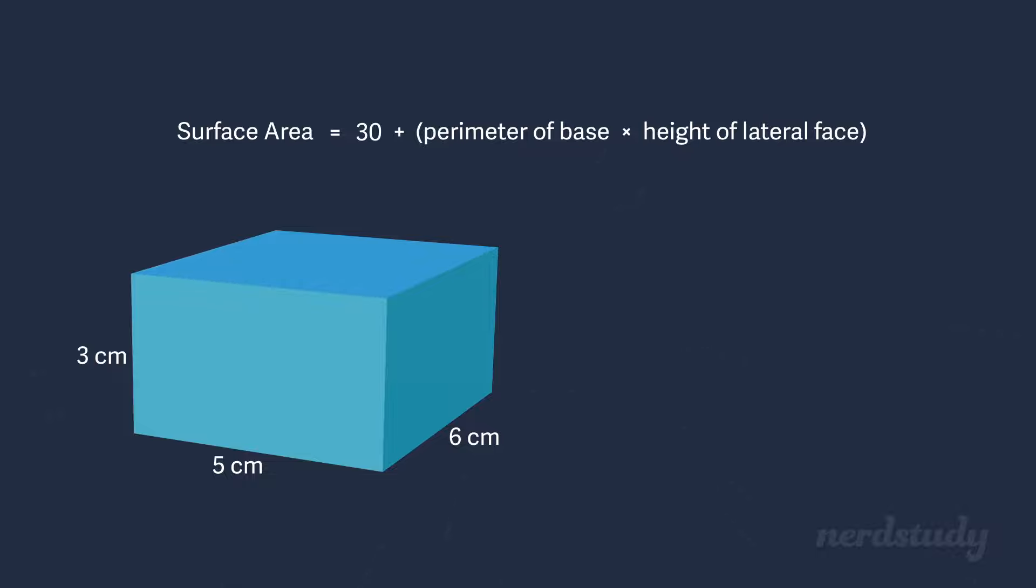What's the perimeter of the base shape? Well, the opposite sides are the same in length, which means it's 3 plus 3 plus 5 plus 5, making it 16 centimeters. Since the height of the lateral face here is 6, we do 16 times 6, giving us 96.